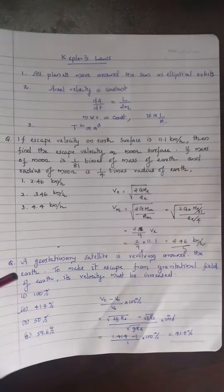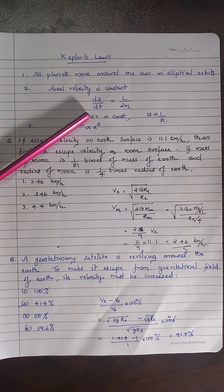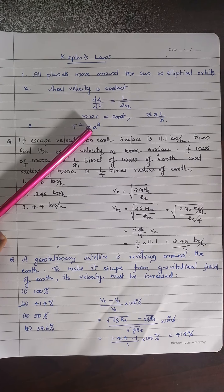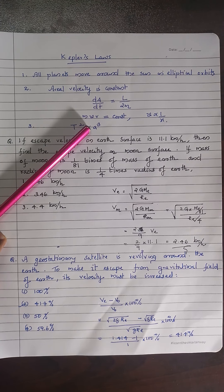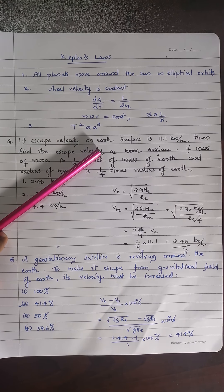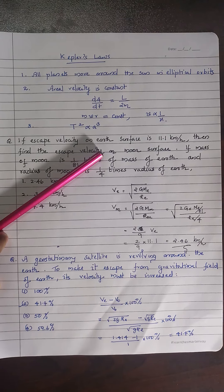Kepler's three important laws: First, all planets move around the Sun in elliptical orbits. Second, the aerial velocity dA/dt = L/2M is constant — angular momentum L is constant for planetary motion, so MVR = constant, meaning velocity is inversely proportional to distance; the planet moves fastest when closest to the Sun. Third, the square of the time period is proportional to the cube of the semi-major axis.